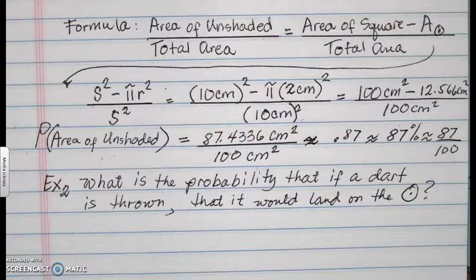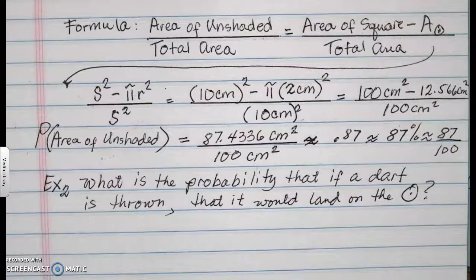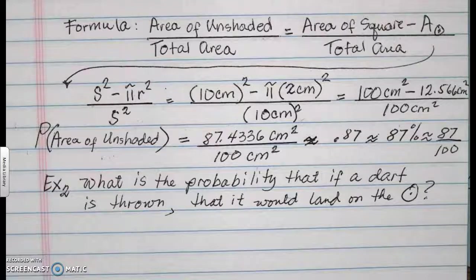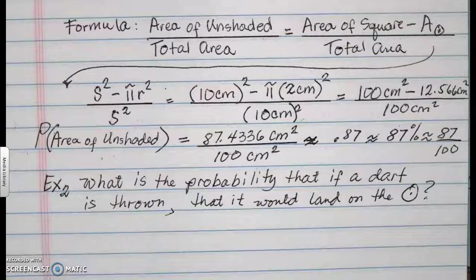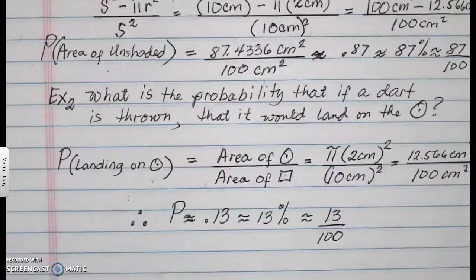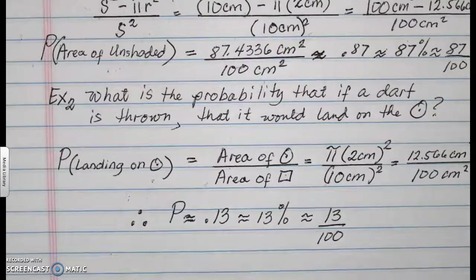My example number two is still based on the figure that we previously have. It says, what is the probability that if a dart is thrown, that it would land on the circle? So let's solve it.